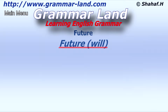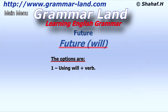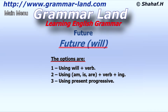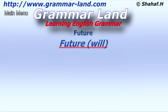Hello everyone. We are in the chapter 'Future Tense.' As I've told you in the previous lesson, there are three options to express the future tense: one, using 'will' plus verb; two, using verb 'to be' — am, is, or are — plus verb plus -ing; three, using present progressive tense to express near future. In this lesson we will learn the first option: future 'will.'